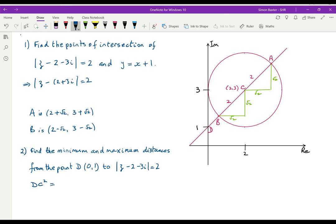So DC squared is x coordinate—if you're fussy about it, you can write 2 minus 0 squared, or just 2 squared—and the y coordinates, 3 minus 1 squared. That is just 8, and therefore DC equals 2 root 2.